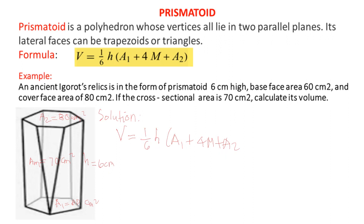Prismatoid. A prismatoid is a polyhedron whose vertices all lie in two parallel planes. Its lateral faces can be trapezoids or triangles. The formula is: volume equals one-sixth times H times (E1 plus 4M plus E2), where M is the middle cross-sectional area.